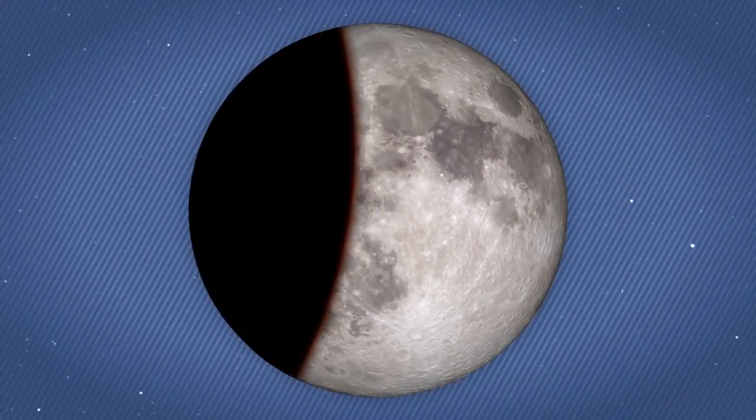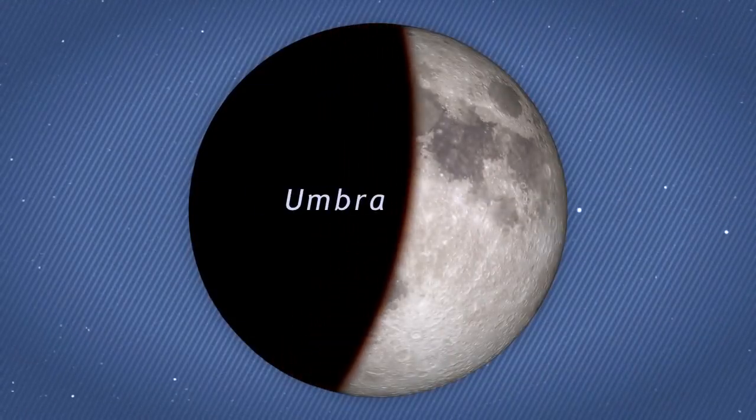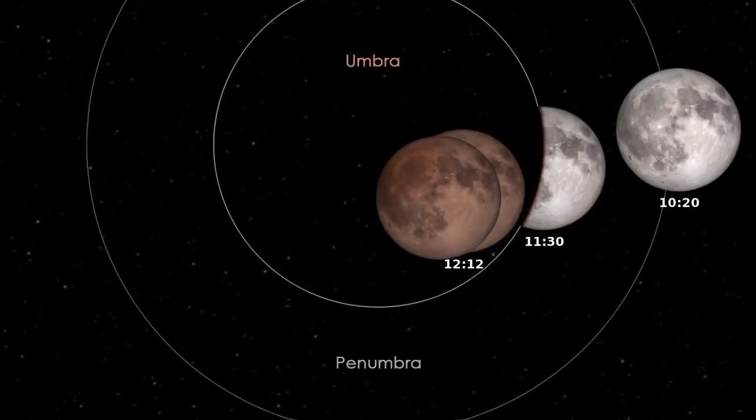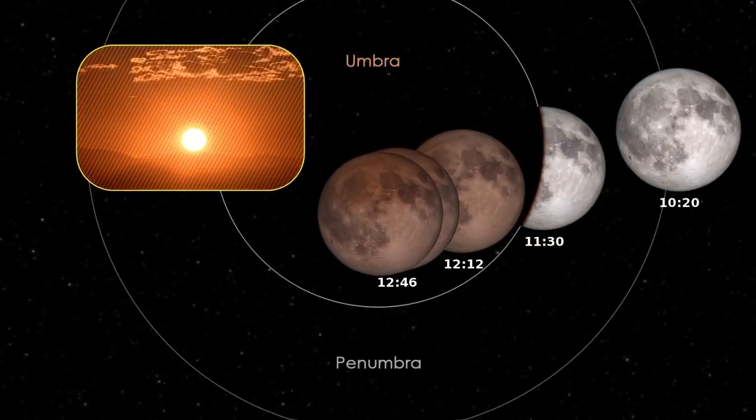As the moon passes into the central part of the Earth's shadow, called the umbra, it darkens dramatically. Once it's entirely within the umbra, the moon appears a dim red due to sunlight scattered through the Earth's atmosphere.